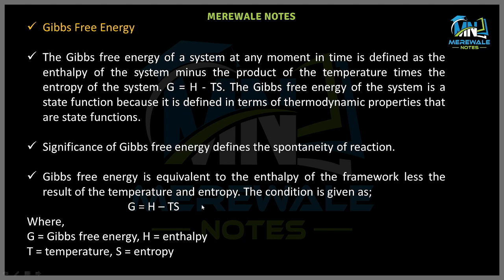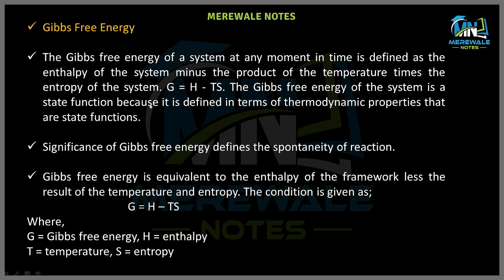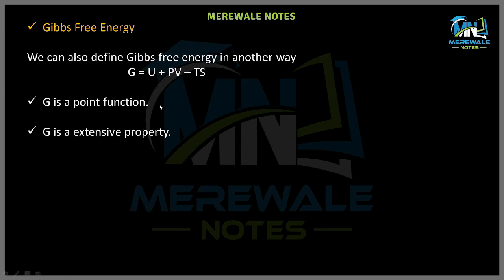We can also define Gibbs free energy using another formula. Since H = U + PV (internal energy plus pressure times volume), substituting gives G = U + PV − TS. So G is a point function and also a state function.